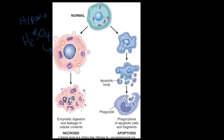How the necrosis process happens involves enzymatic digestion and leakage of cellular contents. Inside each cell are little lysosomes. Lysosomes have enzymes inside them. Enzymes are a specific type of molecule that help speed up a reaction — they help break down or speed up reactions. In the case of lysosomes, they have enzymes that degrade contents.